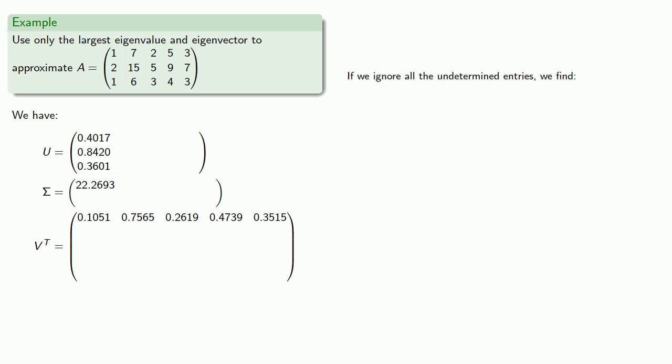And now let's ignore all of our undetermined entries. And so this matrix U, we'll treat this as matrix U', which just consists of a single column vector. This matrix Σ, we'll treat this as matrix Σ', which consists of just that largest square root of the eigenvalue.